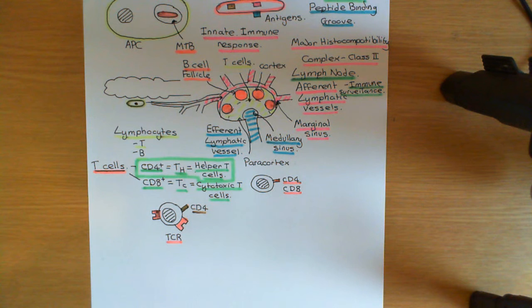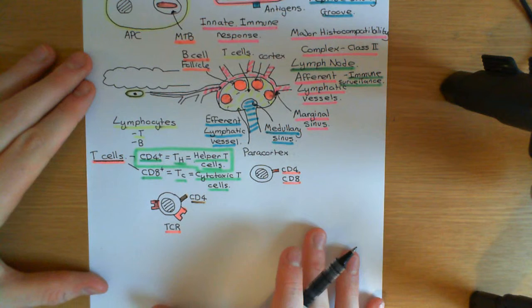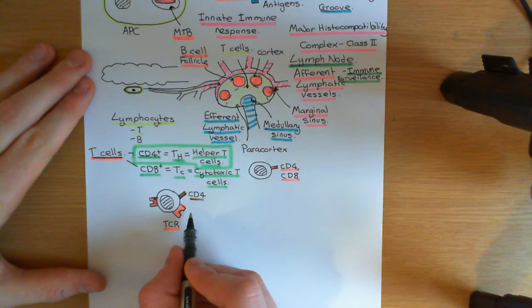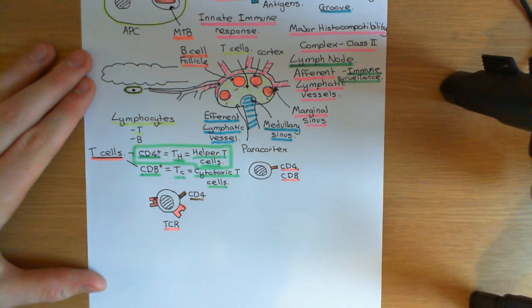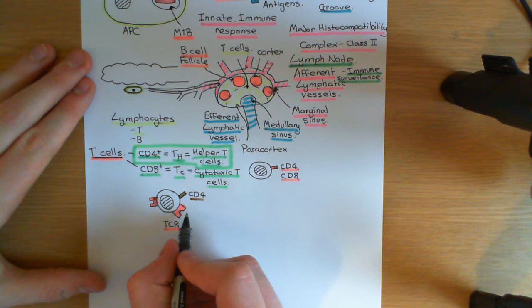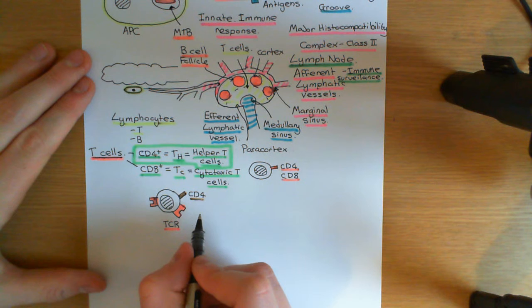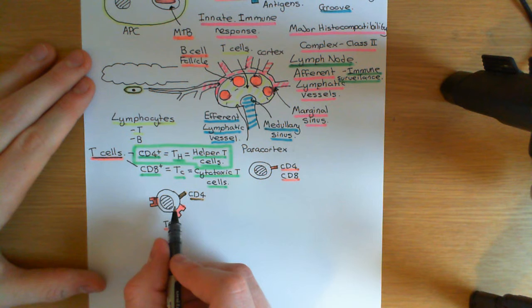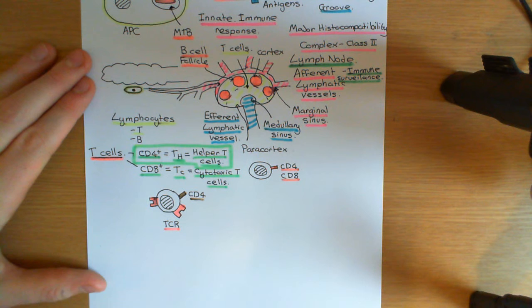Each T cell makes one design of T cell receptor and makes loads of copies of it, sticking them all over its surface. The T cell receptor is capable of binding to MHC class II — since we're talking about CD4 positive T cells — with a certain peptide fragment in the peptide binding groove. This is what makes the T cell specific to a certain fragment of a certain antigen: its T cell receptor design will only recognise a certain peptide fragment from a certain antigen.